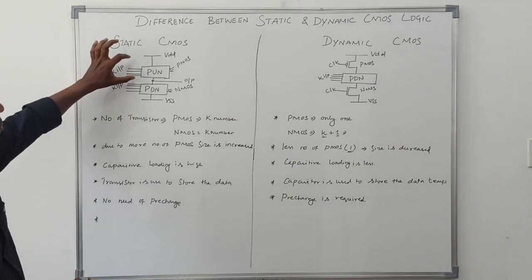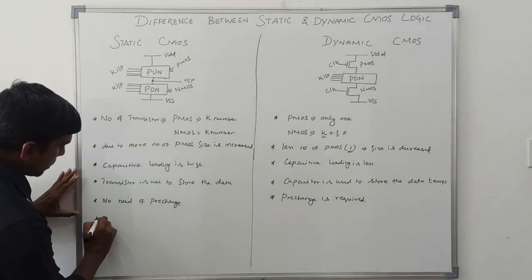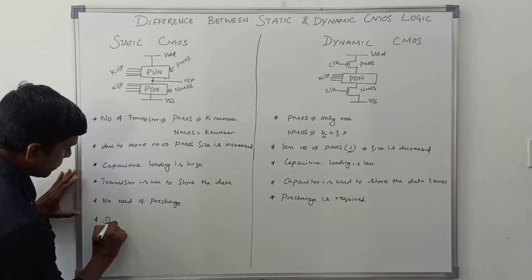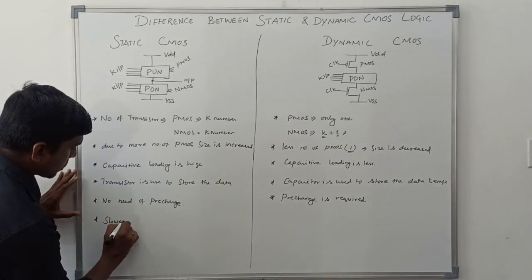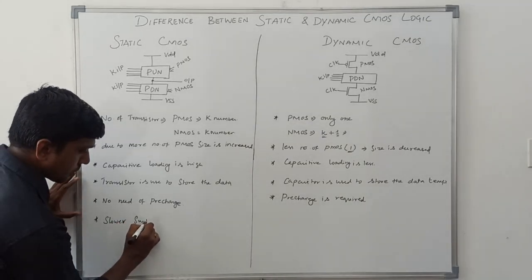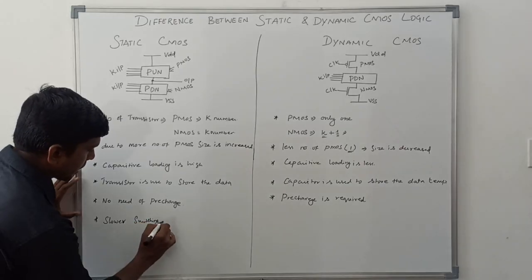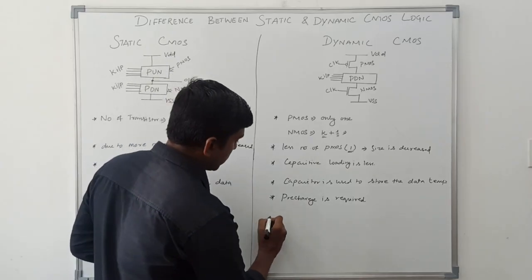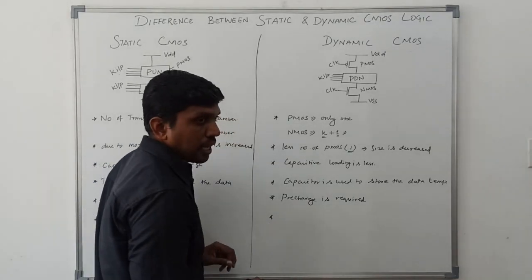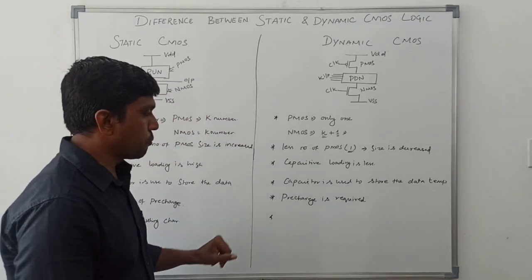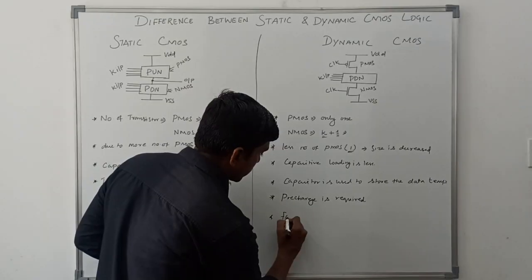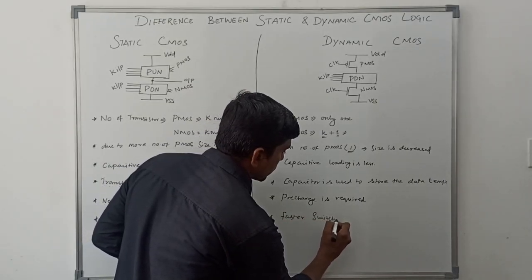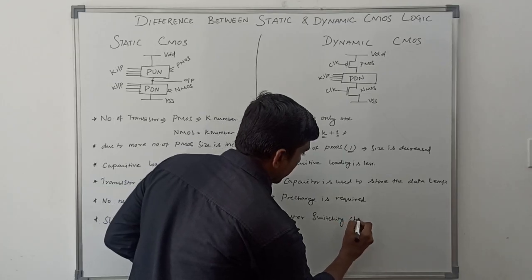Due to the more number of PMOS transistors in static CMOS, the switching characteristic is slower. In dynamic CMOS, the switching characteristic is faster.